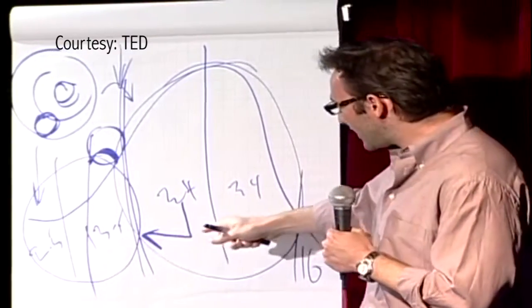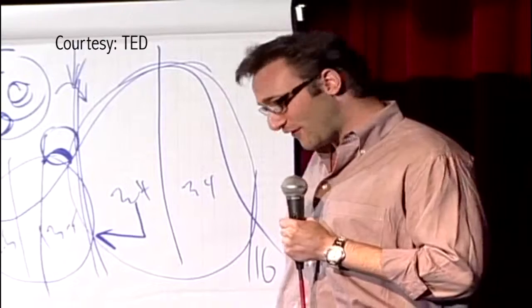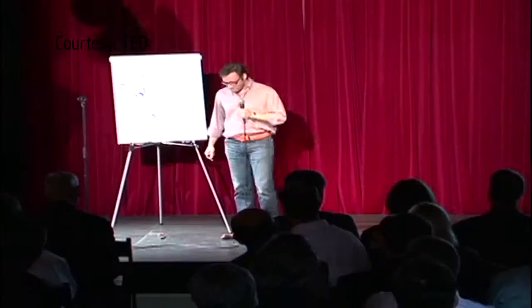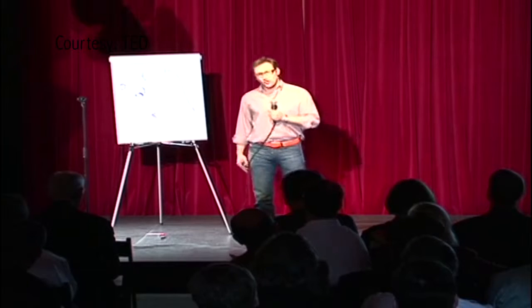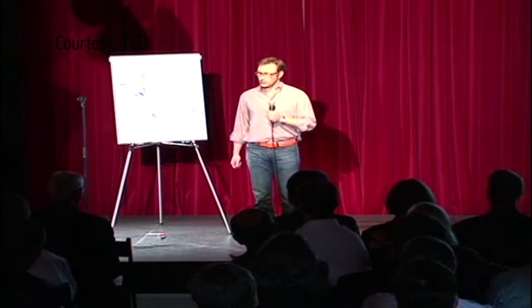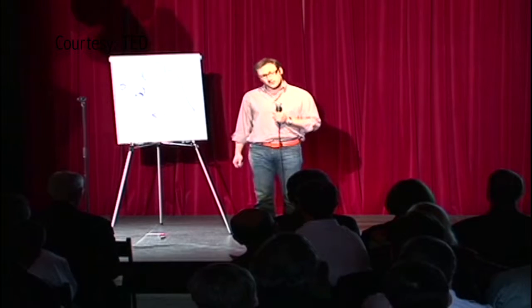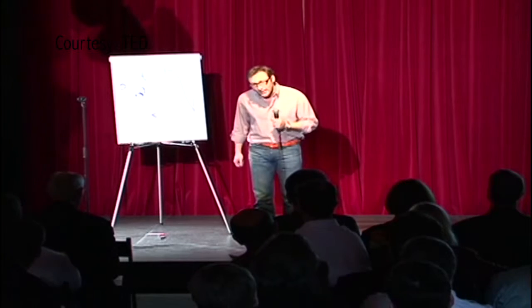Now let me give you a successful example of the law of diffusion of innovation. In the summer of 1963, 250,000 people showed up on the mall in Washington to hear Dr. King speak. They sent out no invitations, and there was no website to check the date. How do you do that?